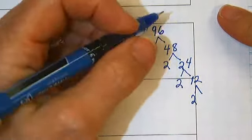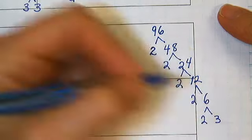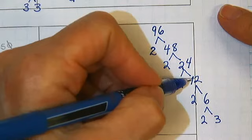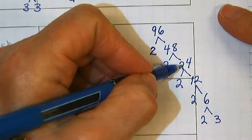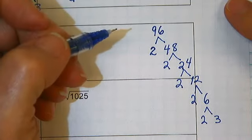Times two is six, times two is three. Two times three is six, times two is twelve, times two is twenty-four, times two is forty-eight, times two is ninety-six. So we have all the factors.